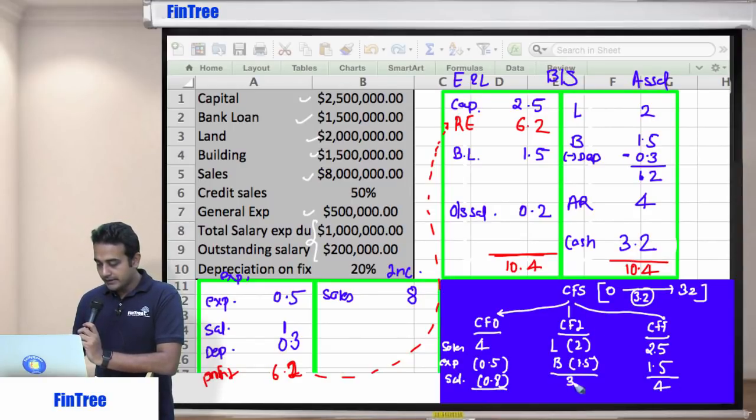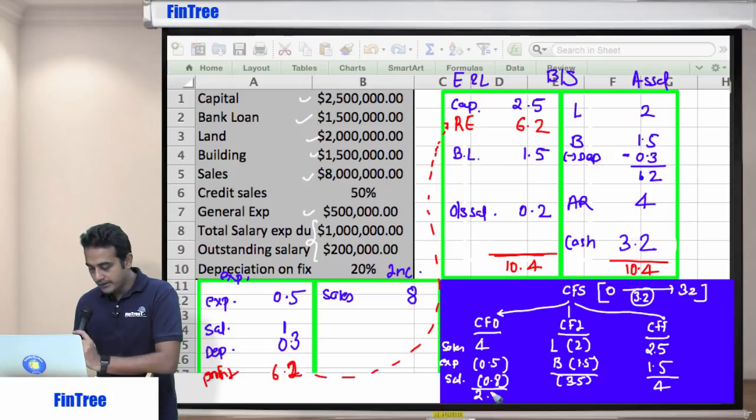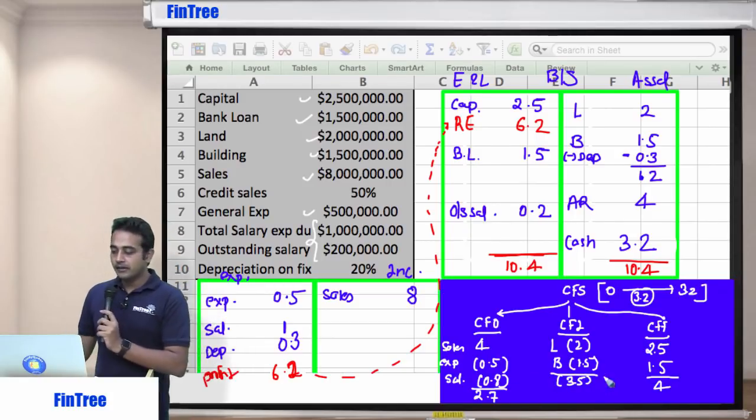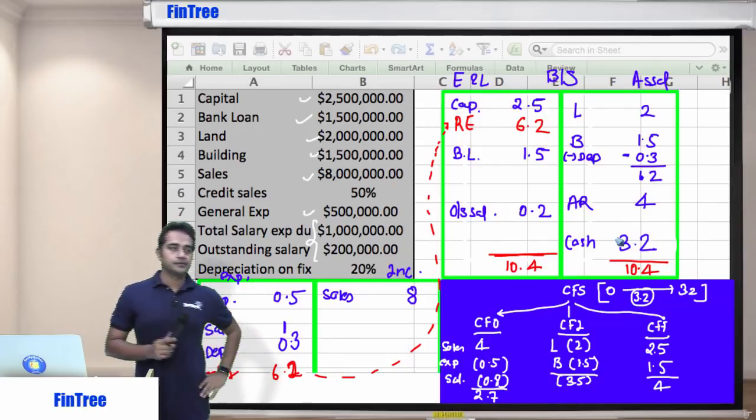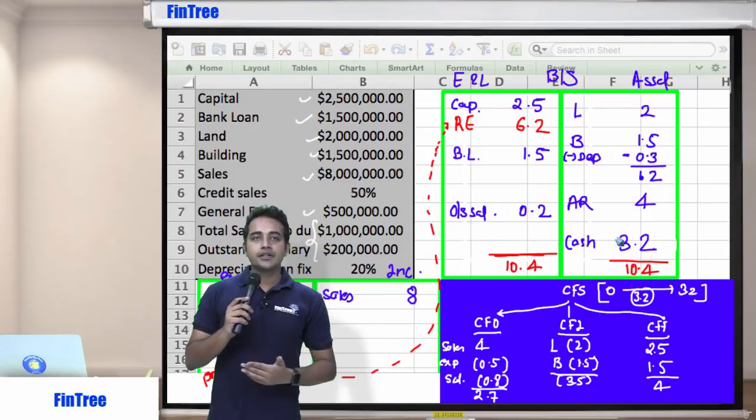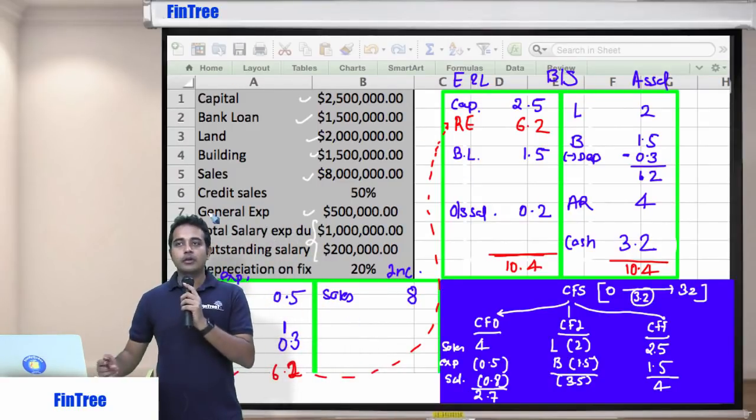So your CFF is positive 4. CFI is negative 3.5. And this would be 2.7 positive. Then 2.7 plus 4, 6.7 minus 3.5, 3.2. This is how we build cash flow statement. So all the presentation, formatting, all that part we will learn later on. Just get hold of the logic here. So let's do question number 2.